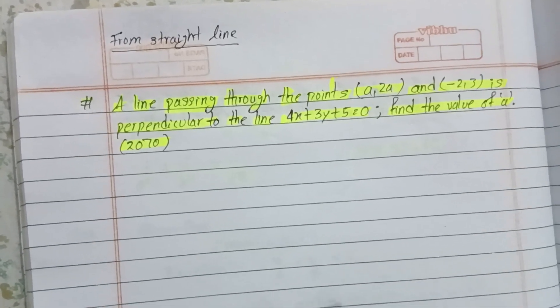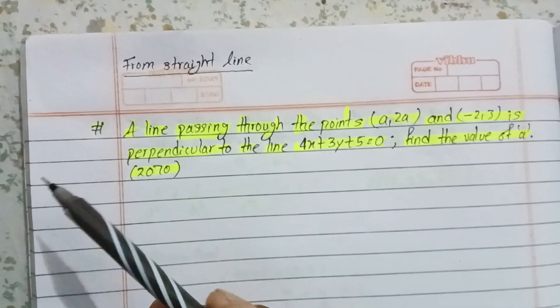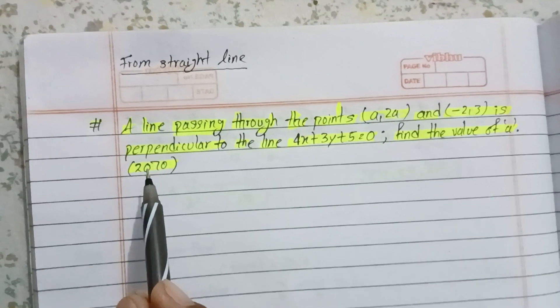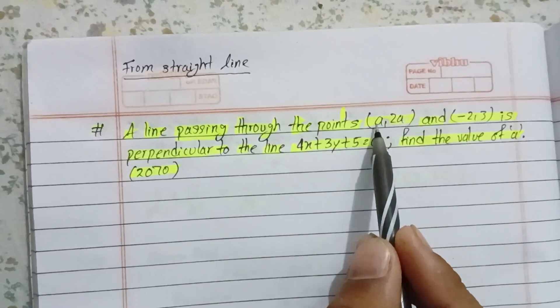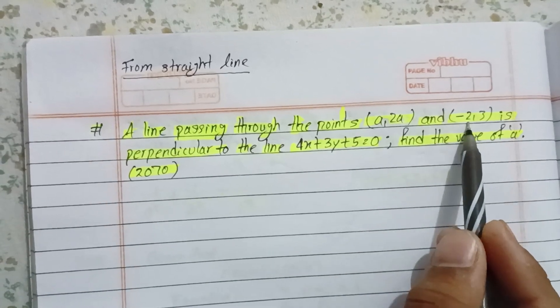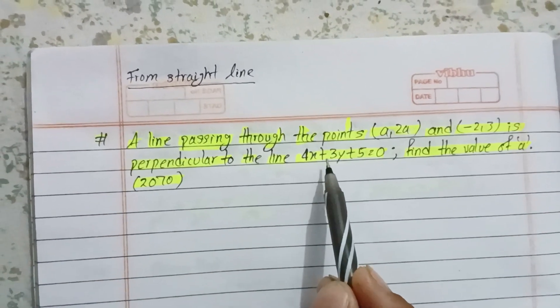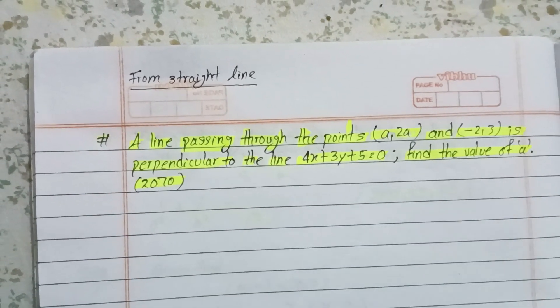Today we are going to talk about a problem from 2017. A line passing through the points (a, 2a) and (-2, 3) is perpendicular to the line 4x + 3y + 5 = 0. Find the value of a.